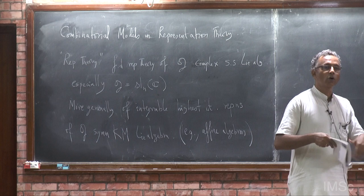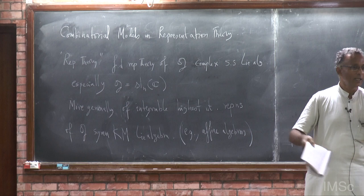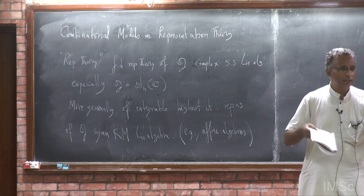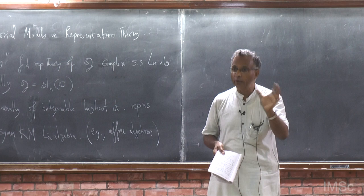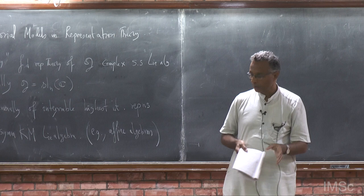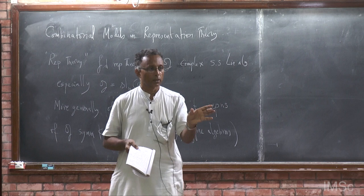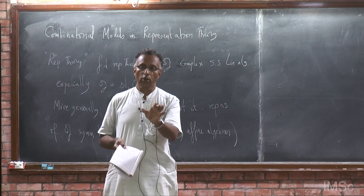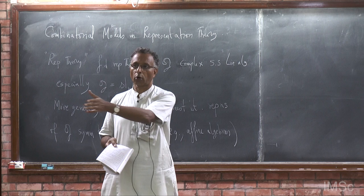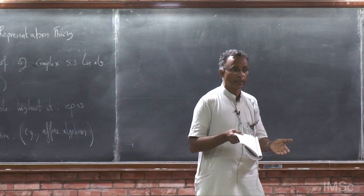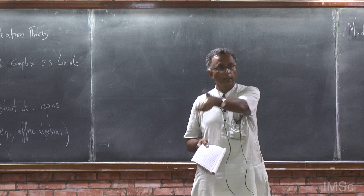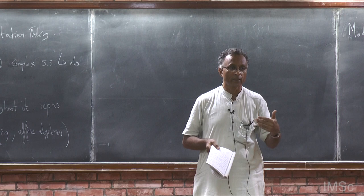Not only are the statements simpler, they are also more malleable — more maneuverable. You can actually work with those general statements. For example, one thing we may later do is the Partha-Sarathi-Rangaravaradhan conjecture, the PRV conjecture, which says something about some irreducible representation occurring in a tensor product of two representations. There is a very simple proof of the PRV conjecture using paths.